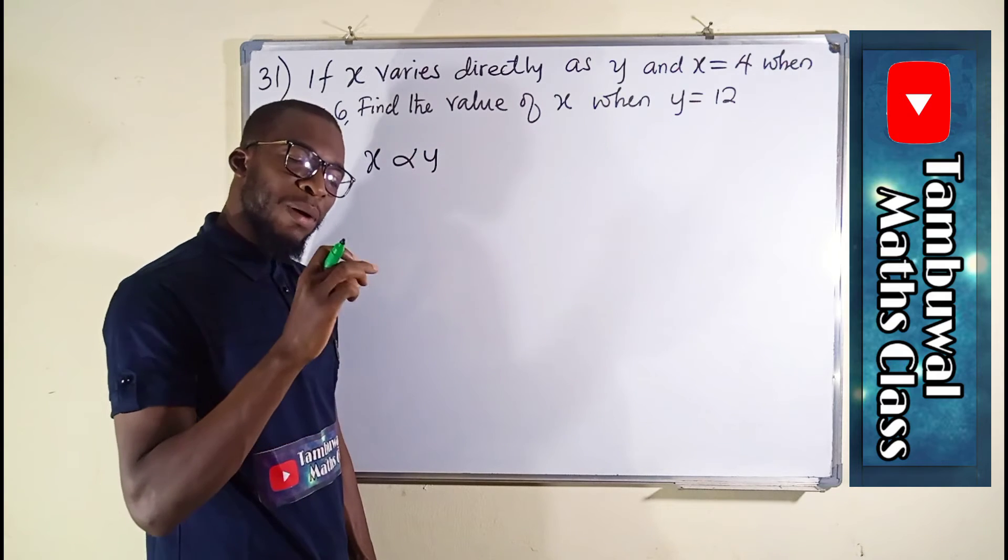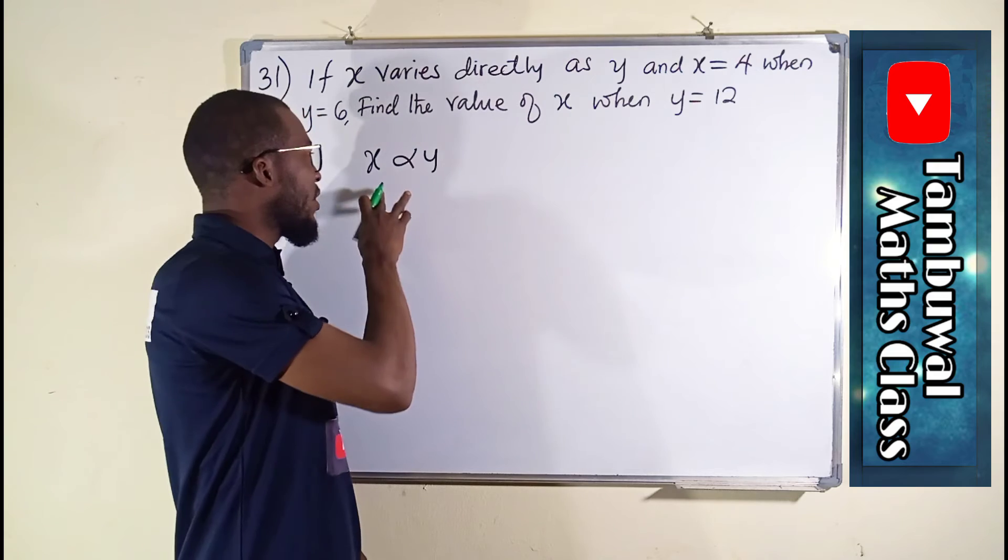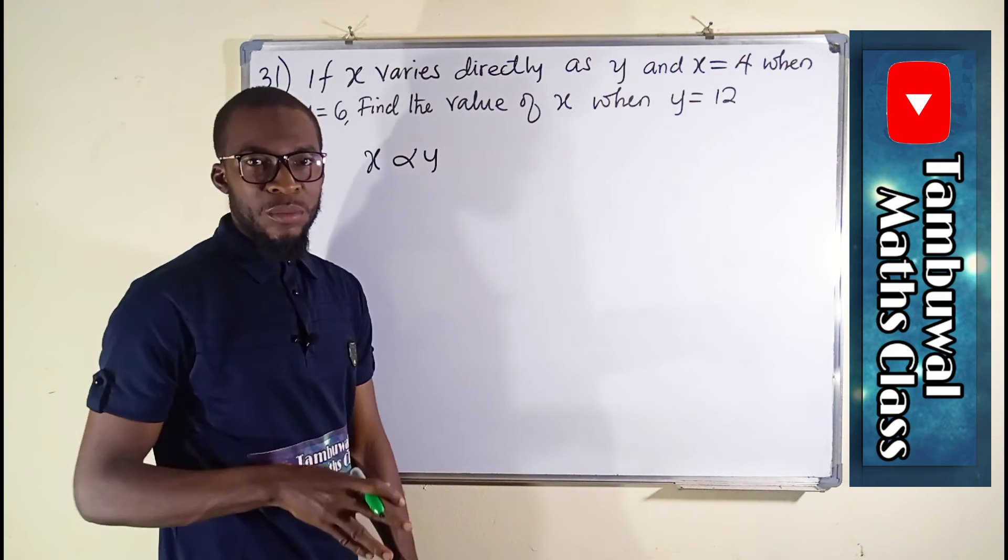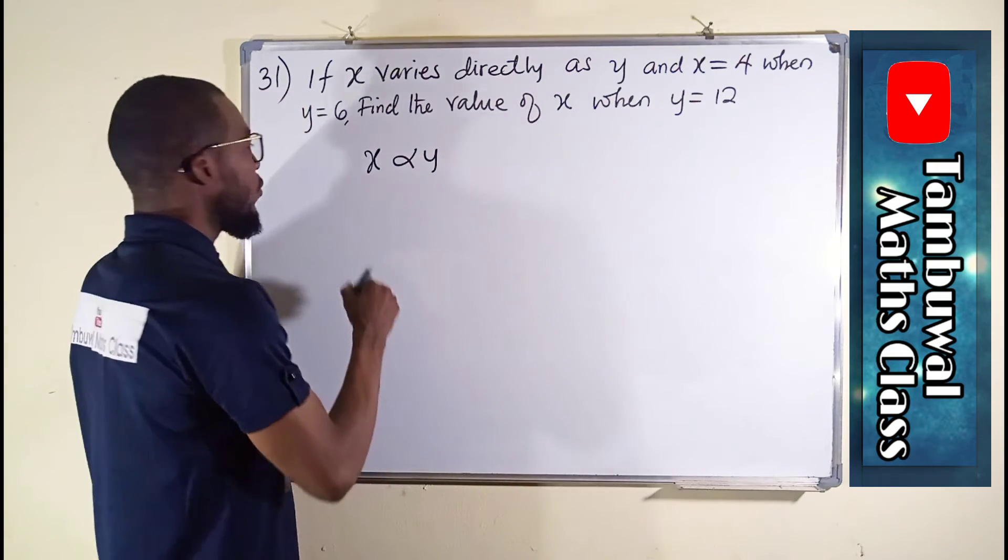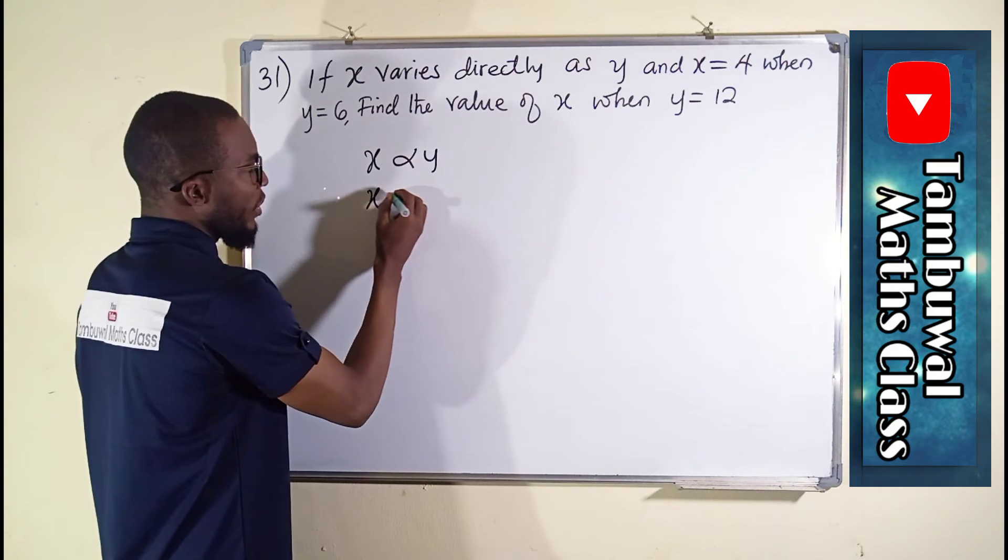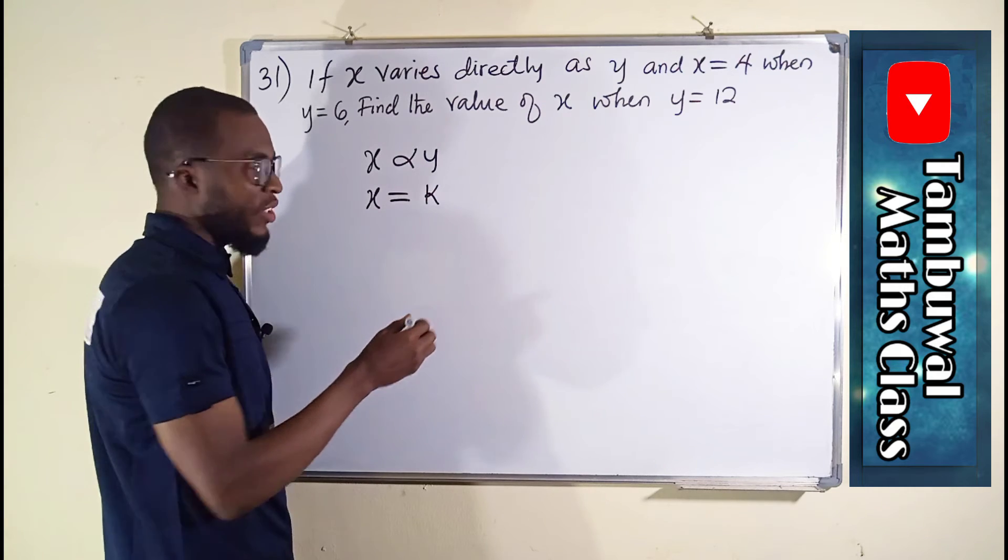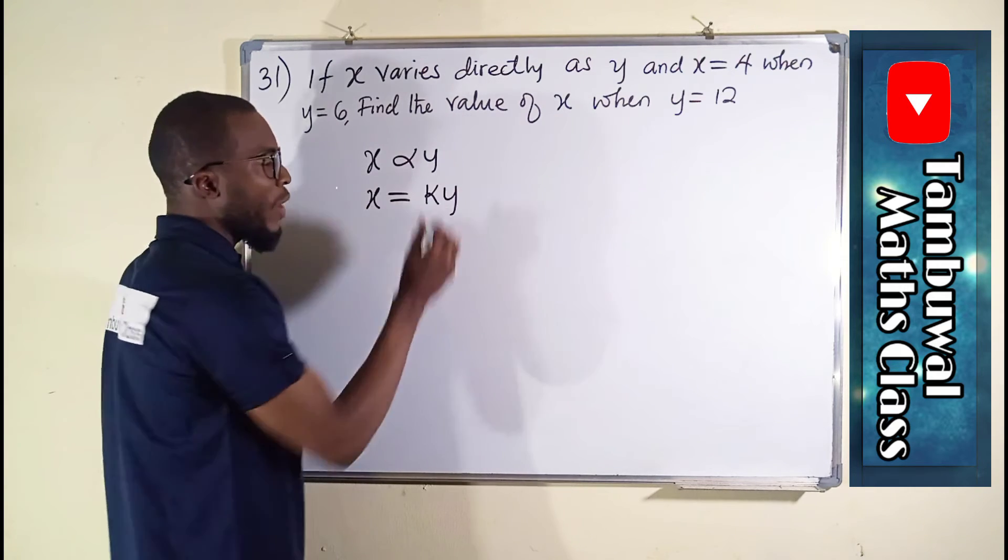There is a particular constant that causes the change between these two variables, which we call k. So x will now be equal to that constant k multiplied by y.